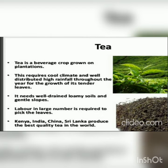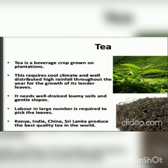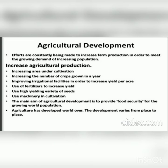Tea is a beverage crop grown on plantations. It requires cool climate, well-distributed high rainfall throughout the year for the growth of its tender leaves, well-drained loamy soil, and gentle slopes. Labour in large numbers is required to pick the leaves. Kenya, India, China, and Sri Lanka produce the best quality tea in the world.